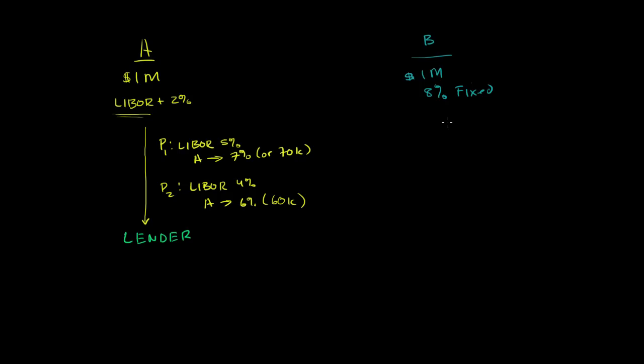So in each period, regardless of what happens to LIBOR or any other benchmark, this is to probably another lender, a different lender than the person that A borrowed it from. It could be a bank, or it might be another company, or an investor of some kind. We will call this lender 1 and lender 2.